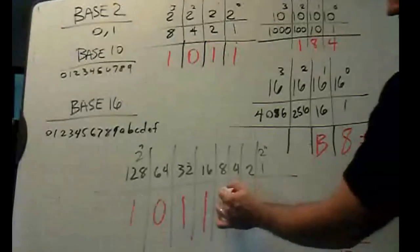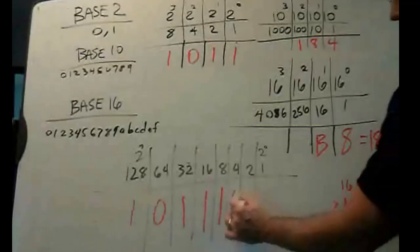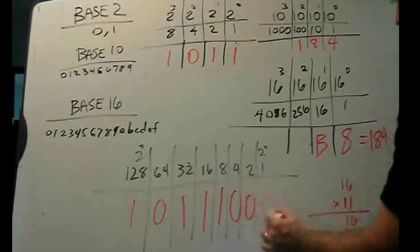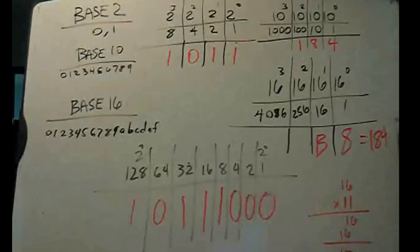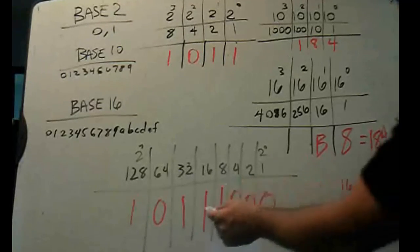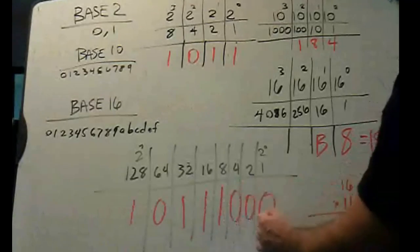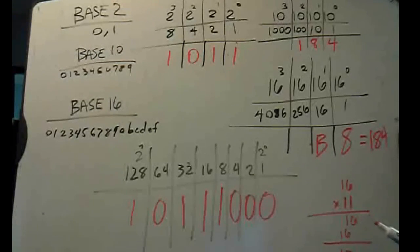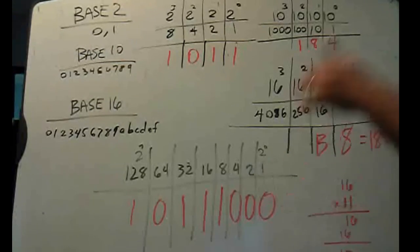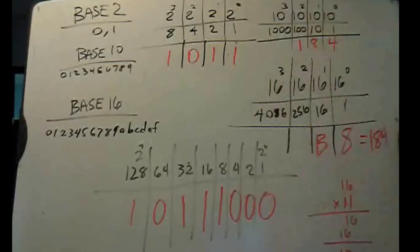How many 8's? 1. That's 184. So, this is going to be a 0, and this is going to be a 0, and this is going to be a 0. So, 10111000 is 184 in binary. And so, now we've written 184 in three different counting systems.